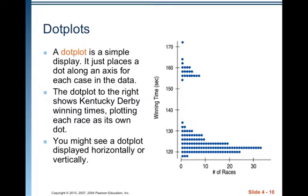Dot plots. A dot plot is a simple display — it just places a dot along an axis for each case in the data. The dot plot shown here displays Kentucky Derby winning times, plotting each race as its own dot. You might see a dot plot displayed horizontally or vertically. If you make one in your calculator, it will be a vertical dot plot where your variable is along the horizontal axis and the counts are along the vertical. It doesn't matter which orientation you use.